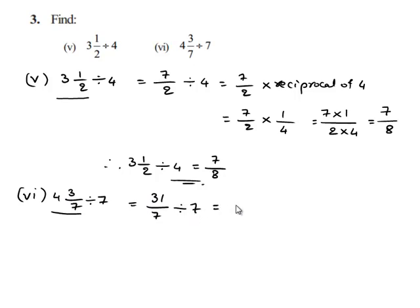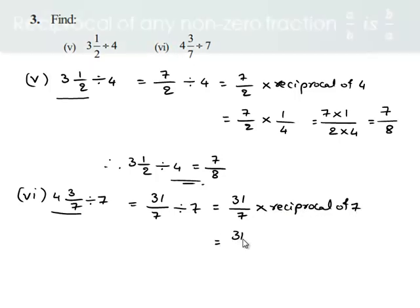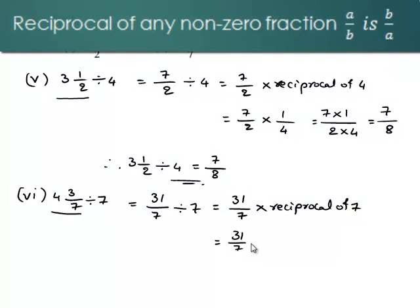This is equal to 31 upon 7 divided by 7, which can be written as multiplied by the reciprocal of 7. This is equal to 31 upon 7 multiplied by 1 upon 7.